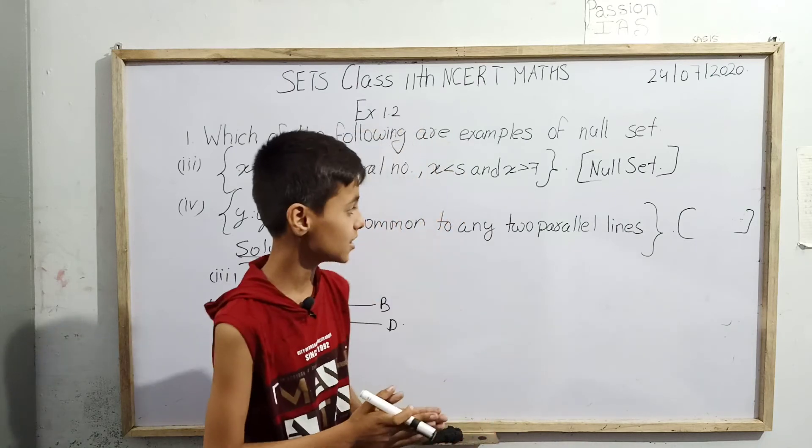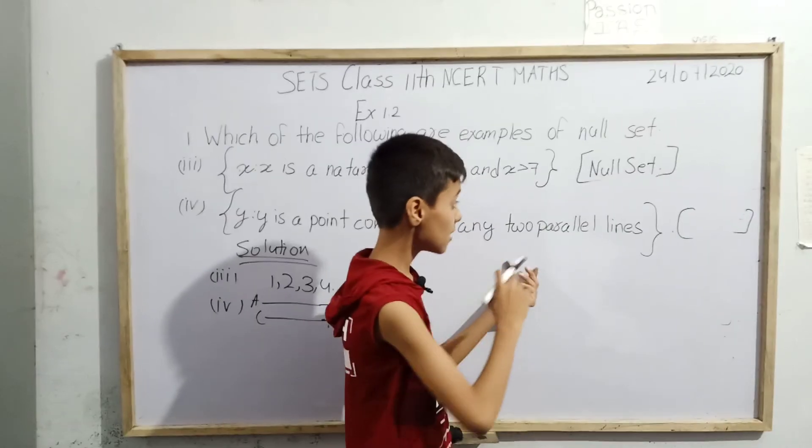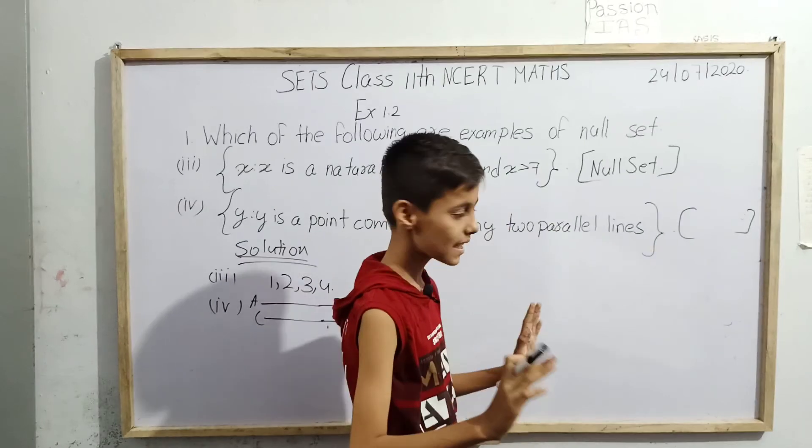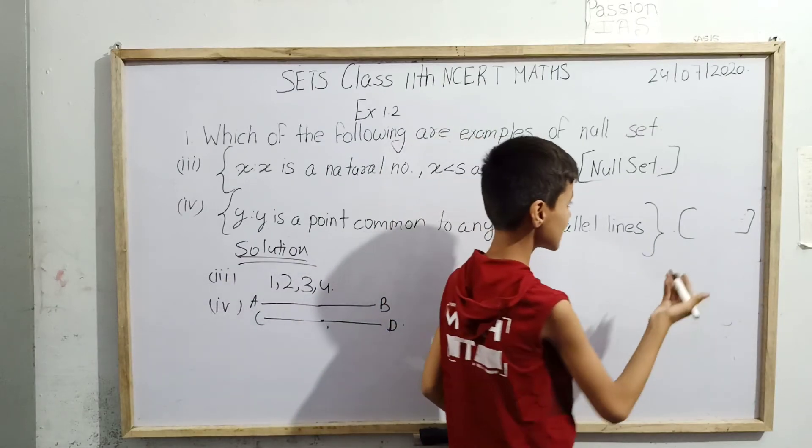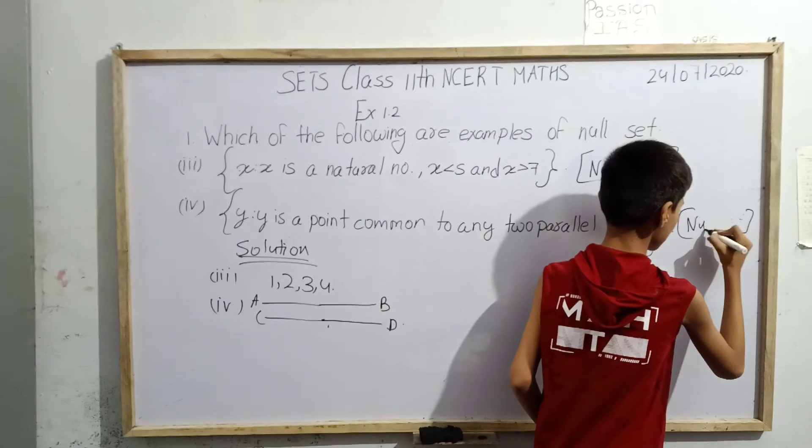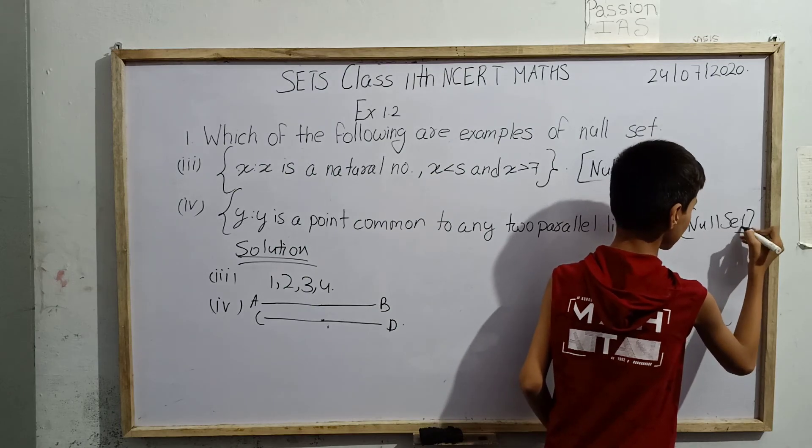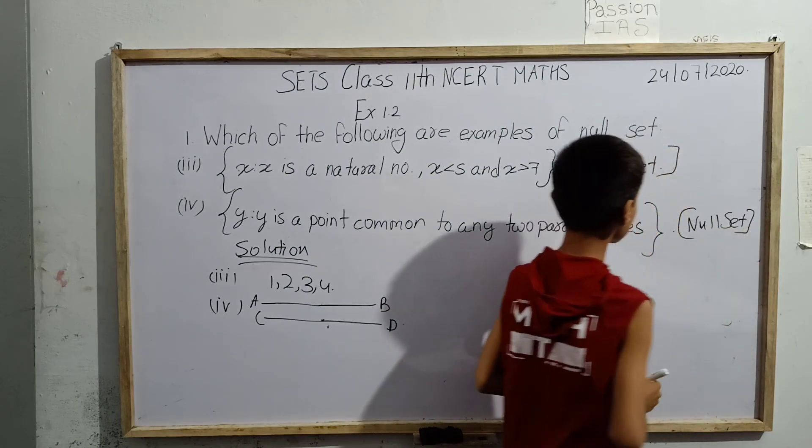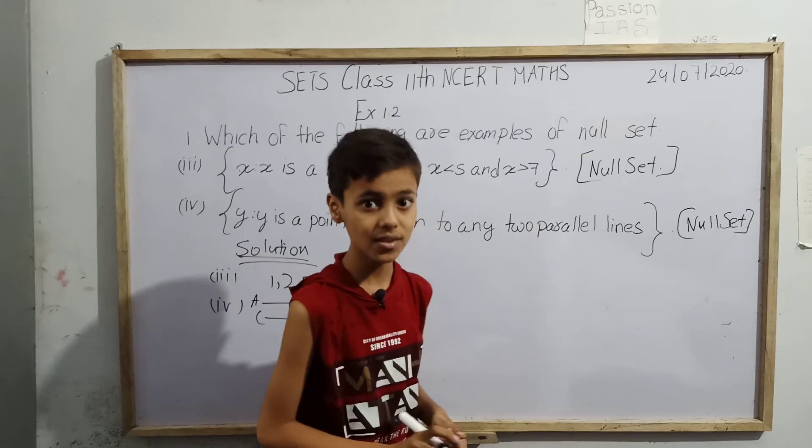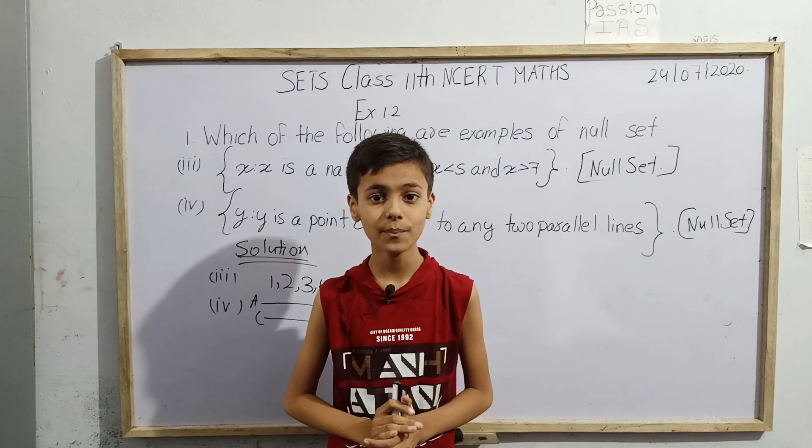By this what we get is that actually there exists no element for such a set where its elements are those points which are common for any two parallel lines. This is also a null set. So we can write that fourth is also a null set. The answer is that third and fourth are null sets. This was my today's topic, thank you.